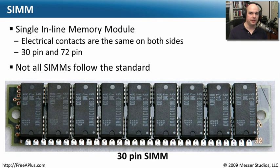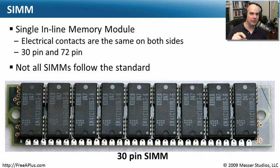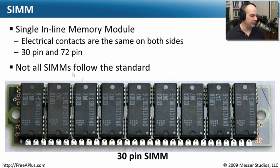One of the first types of memory modules we got on our computers are called SIMMs. Prior to SIMMs, every single individual memory chip had to be added manually onto the computer. You can see here this SIMM, which stands for Single Inline Memory Module, has nine different chips on there.